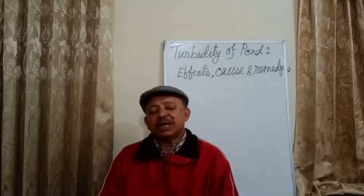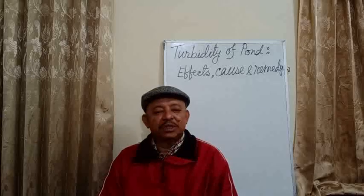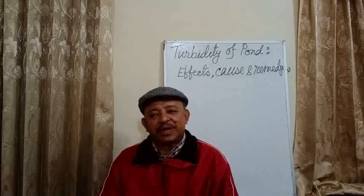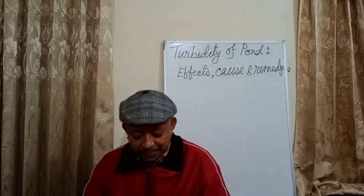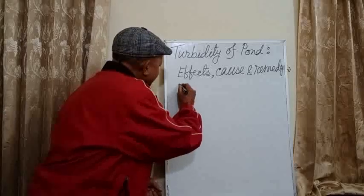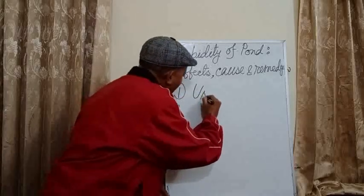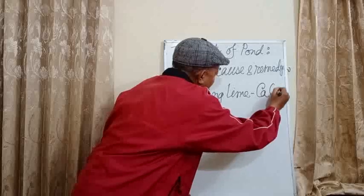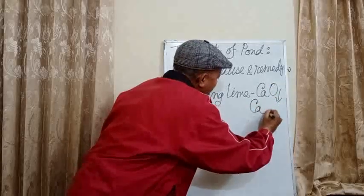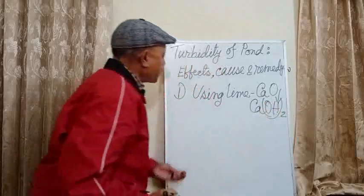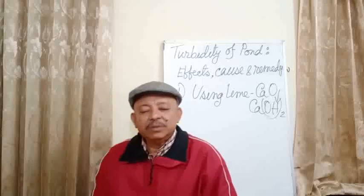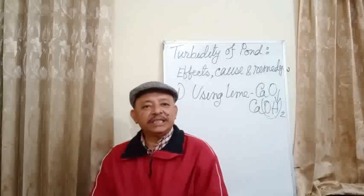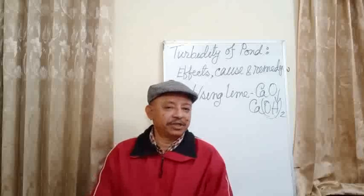To remove the problem of turbidity from our ponds, the first remedy is using lime — that is calcium oxide — which turns into calcium hydroxide after addition of water. Some farmers apply 1 to 2 kg of lime or calcium hydroxide in their ponds.